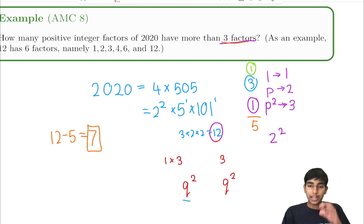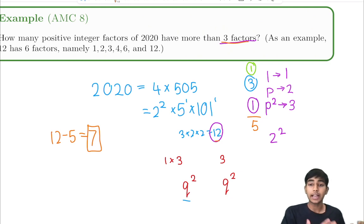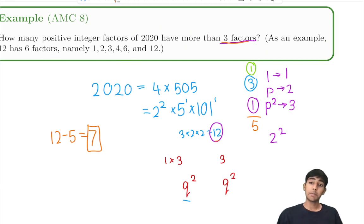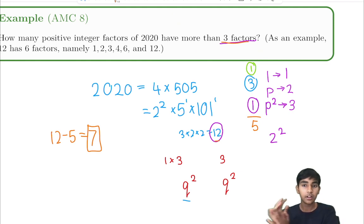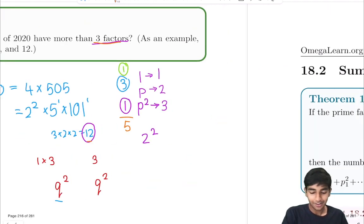Let's break it down. The key idea for this problem was to find the total number of factors using our factor trick, and then use complementary counting — from a previous video — to subtract back off the factors that don't have more than 3 factors themselves.